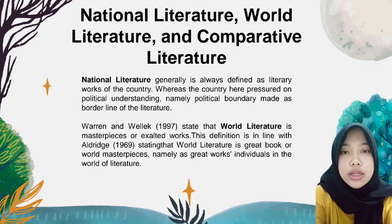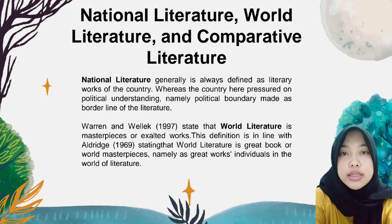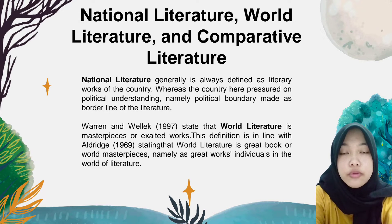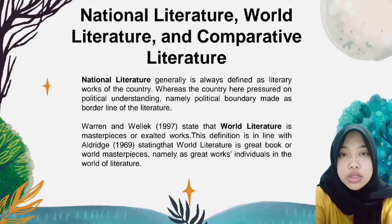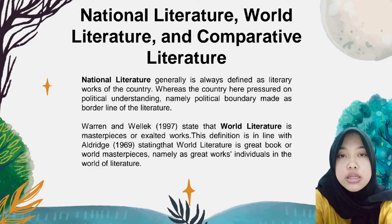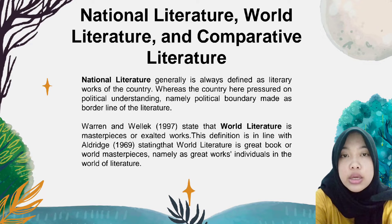The terms national literature, world literature, and comparative literature are the three terms which closely relate to each other, viewed from the historical perspective of comparative literature. The study of comparative literature cannot neglect the role of national literature and world literature. In other words, the existence of various national literatures causes world literature to appear, and world literature is a prerequisite for the study of comparative literature.